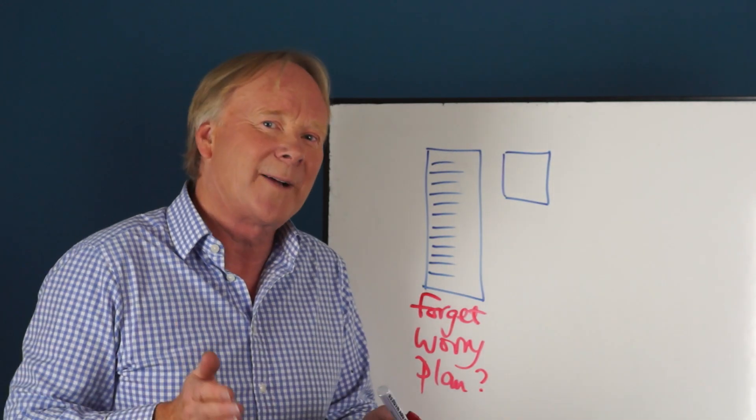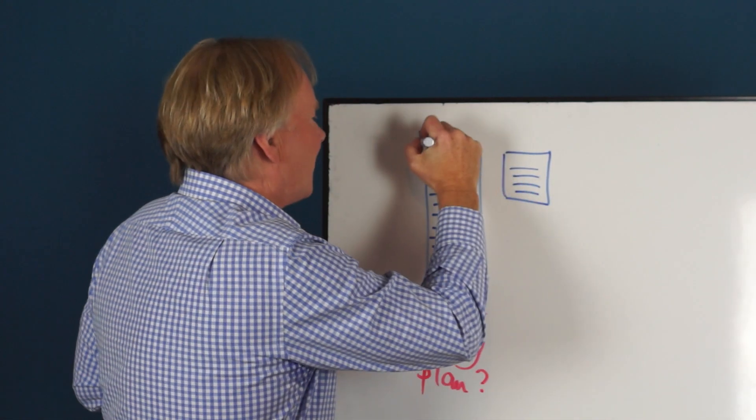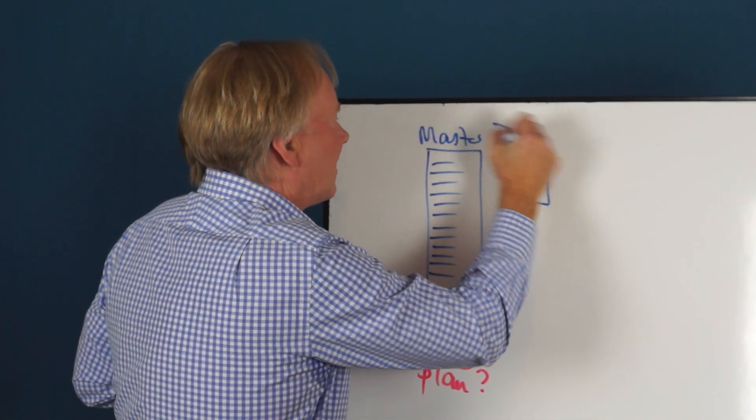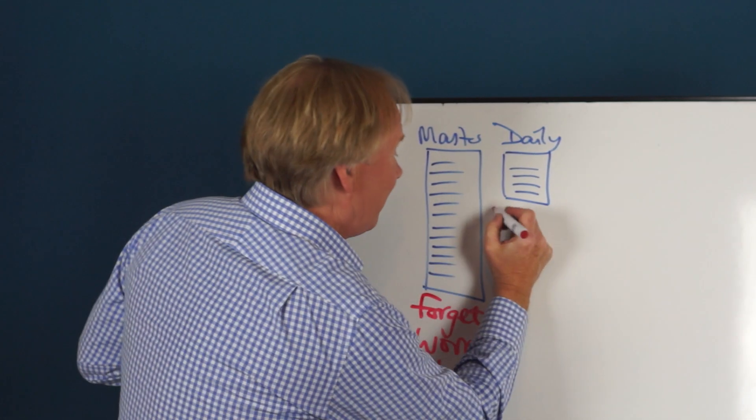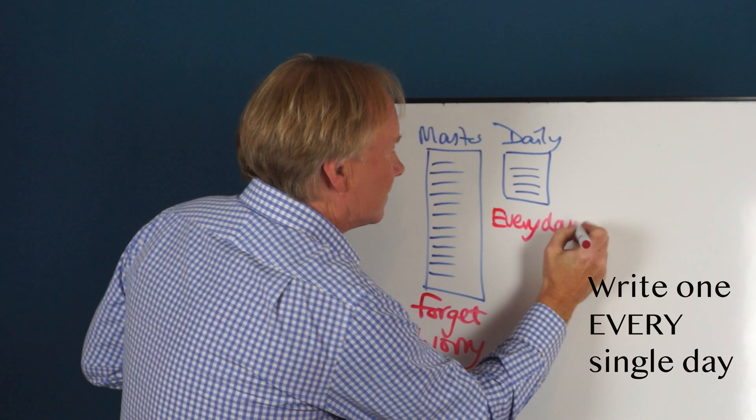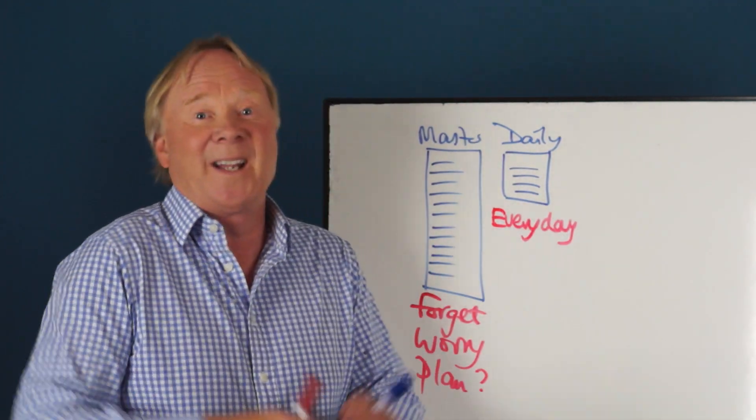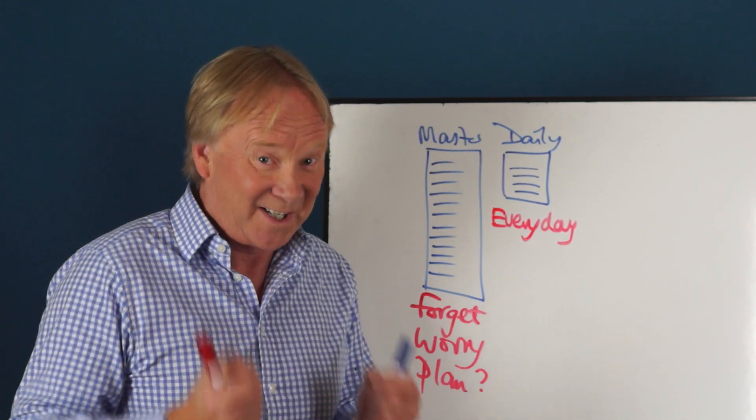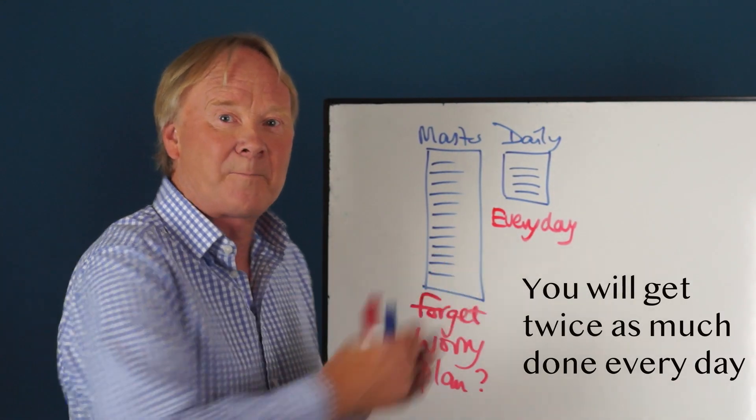It's just a scrap of paper, or an app, or a few lines in your calendar where you write down the small jobs that you're going to do today. Master list, daily list. And you write this every day and it'll help you to focus on what needs to be done that day. And you'll feel great as you cross things off it.